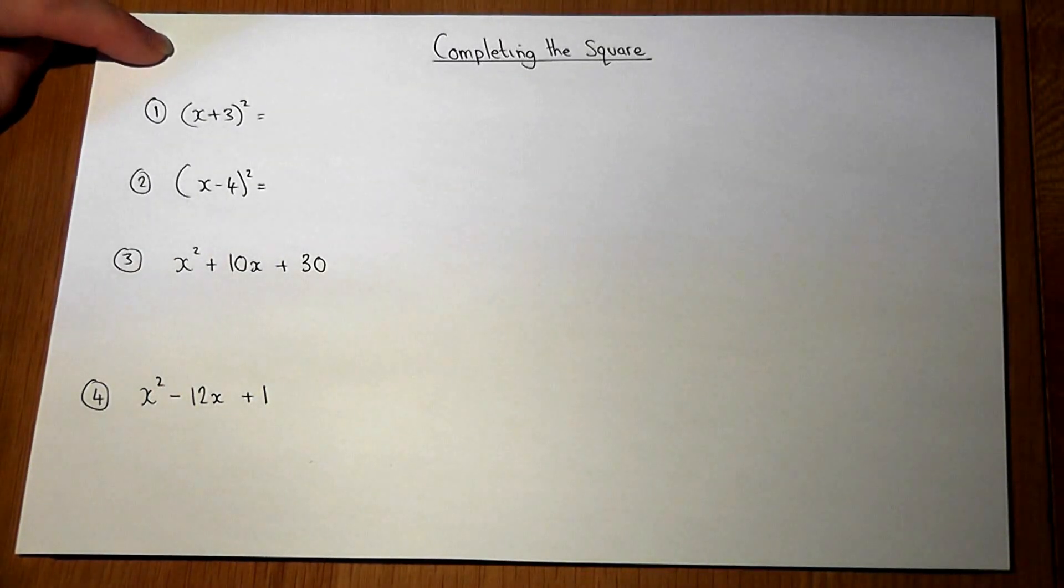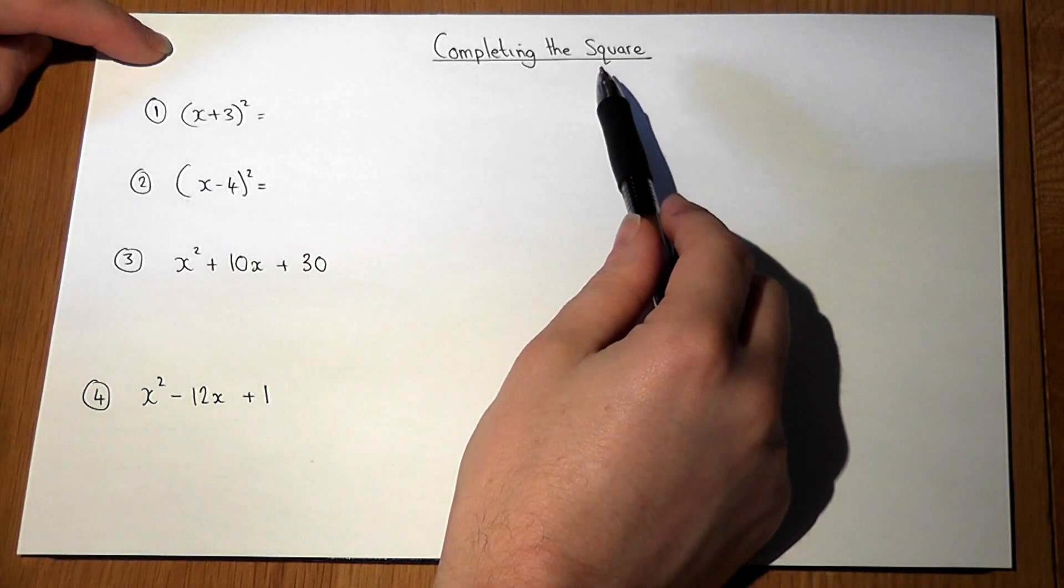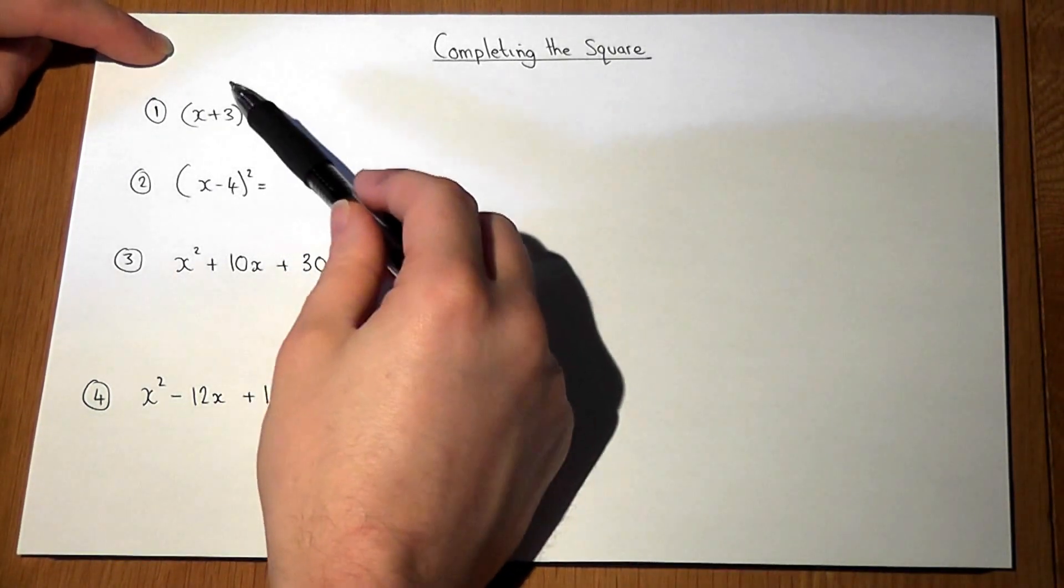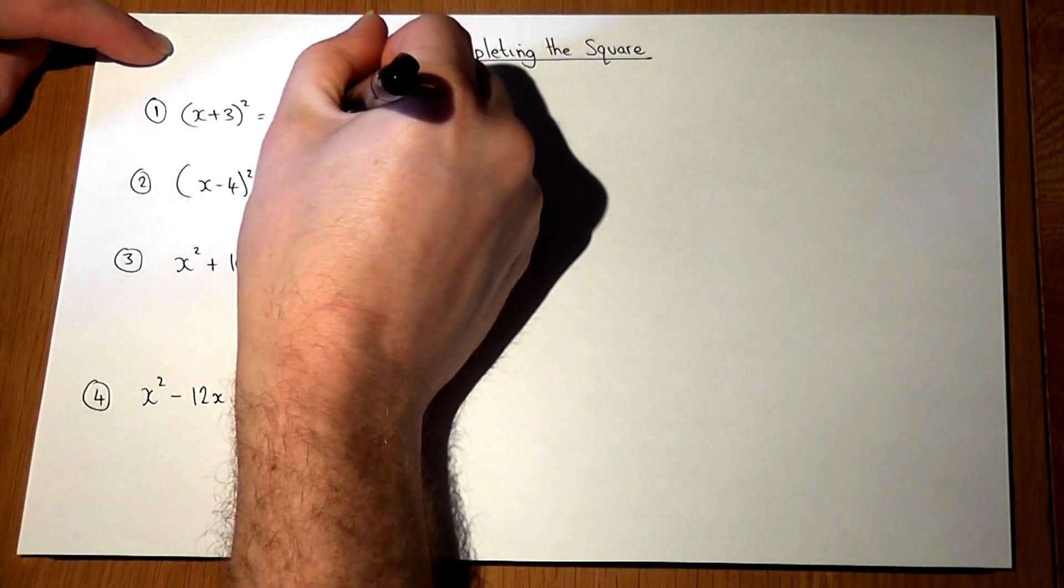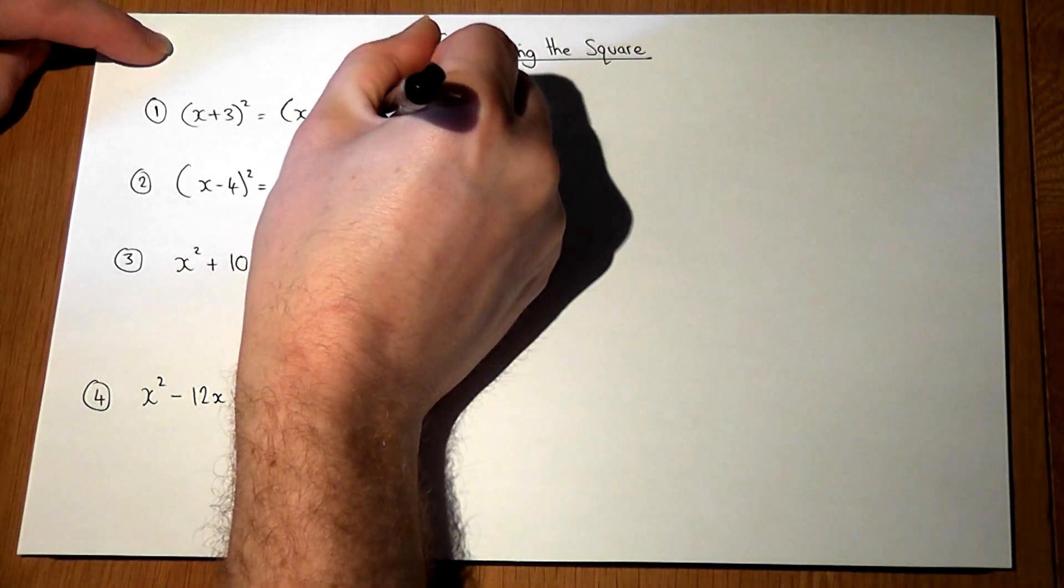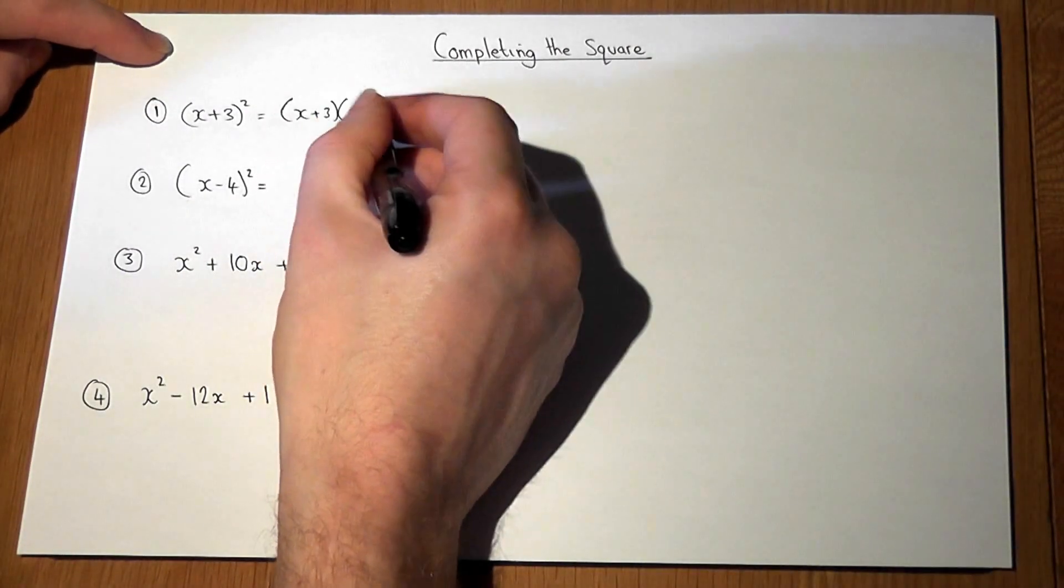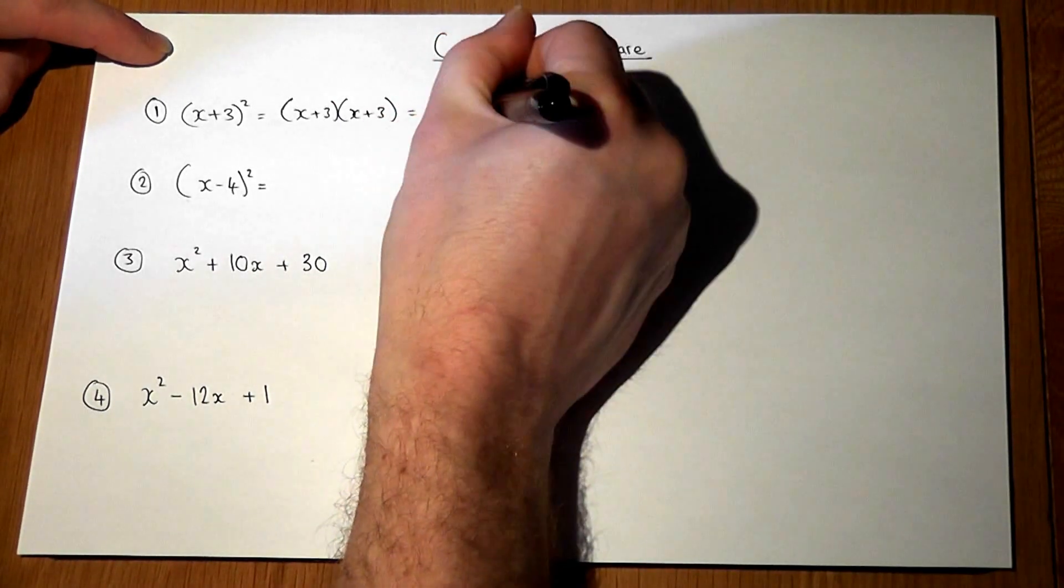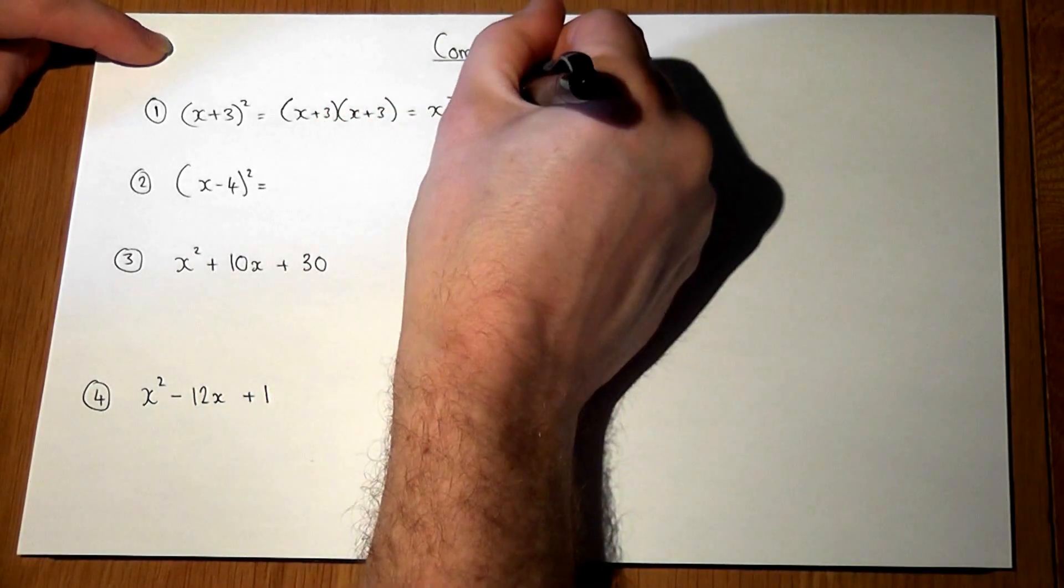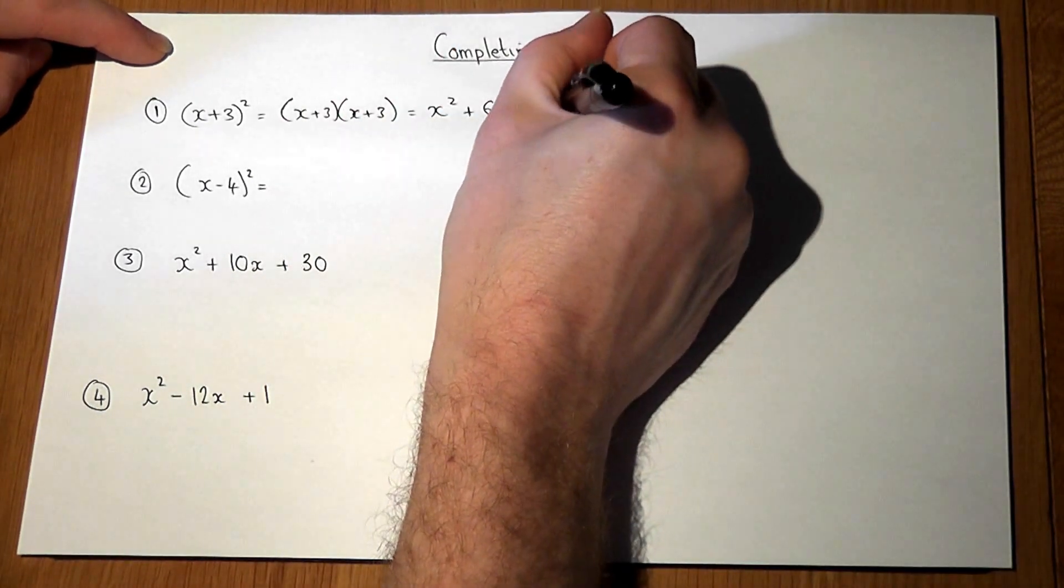This video discusses a concept called completing the square. If we have (x + 3)² we know that equals (x + 3) times (x + 3), which if we expand using FOIL or smiley face or whatever method, gives x² plus 3 plus 3 is 6x, plus 3 times 3 is 9.